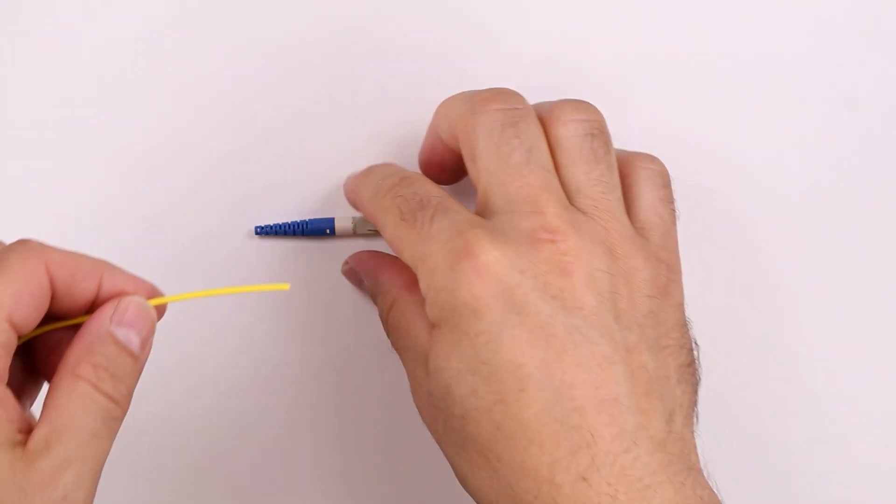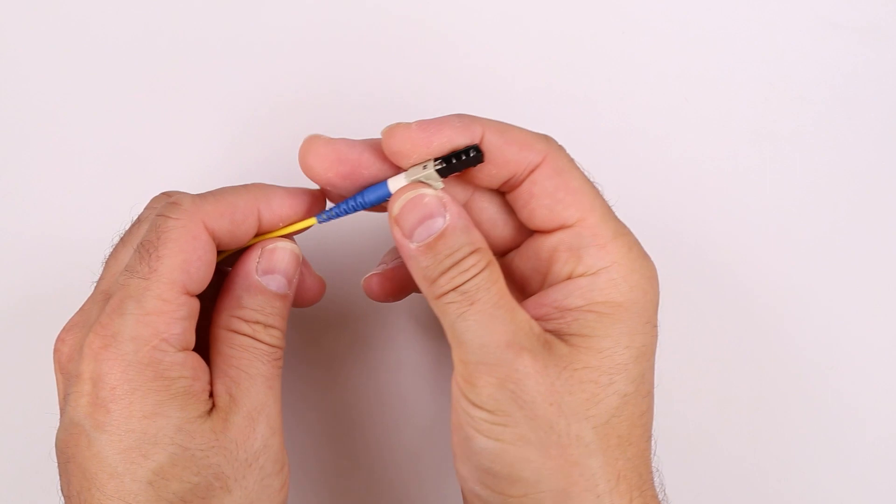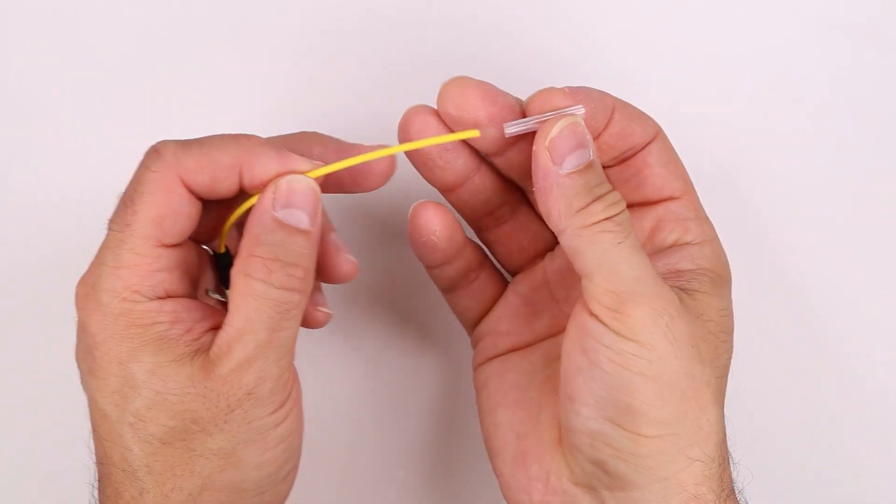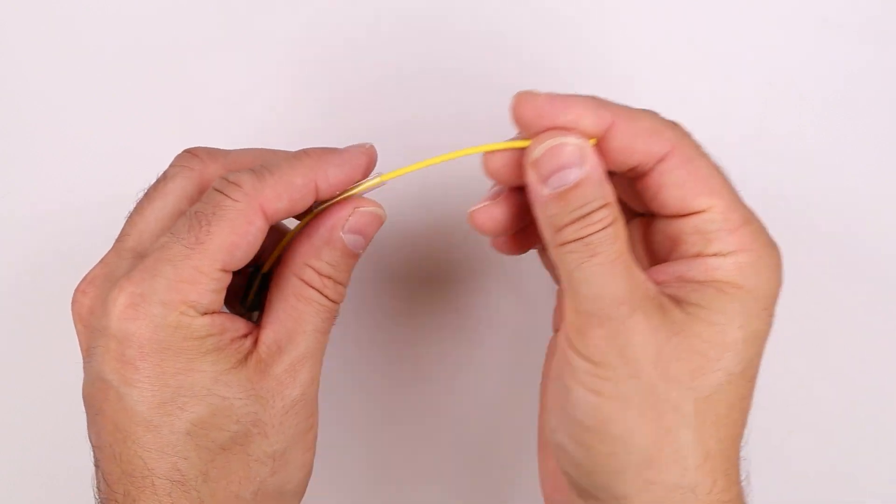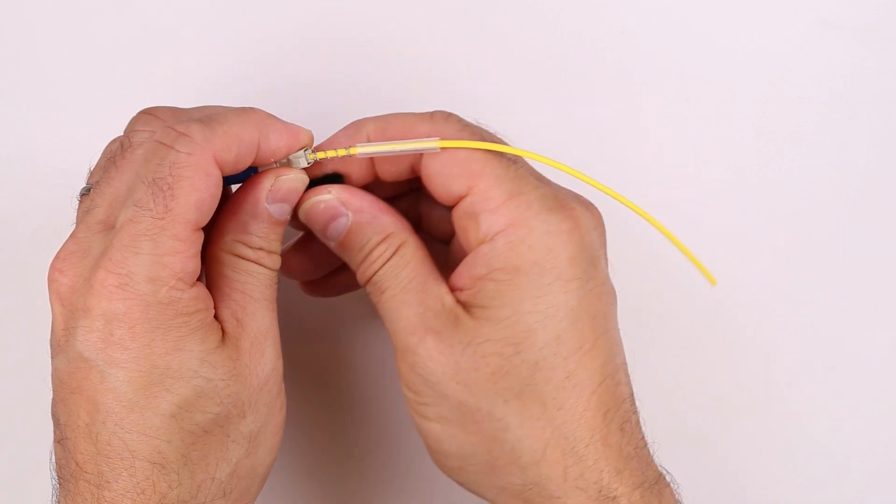To start the process, slide the rear body with boot and spring onto the cable. Then slide the protective sleeve onto the cable. Remove and discard the spring holder.